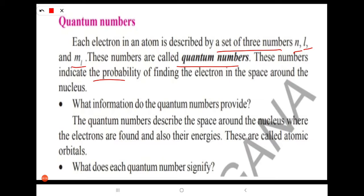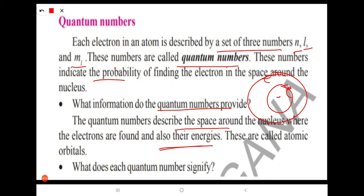The quantum numbers describe the space around the nucleus where the electrons are found and also their energies. These spaces are called atomic orbitals. By using these quantum numbers, we can easily describe the space around the nucleus, where the electrons are found, and also the energy of the electrons.